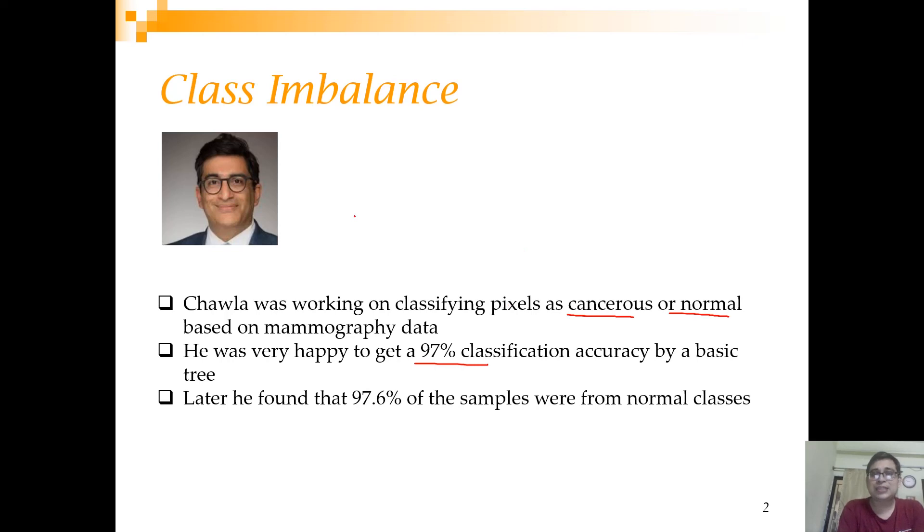Why? Let's understand this in more detail. Let's say you have 100 pixels in your sample and out of them 98 are normal and 2 are cancerous. If you build a simple program which takes a pixel as an input and tells it is a normal pixel, what will be the classification accuracy? It will be 98%. Why is this problem happening when the program has not learned anything? Because there is a big disparity, or imbalance, between the frequency of the classes. Such a problem is called the class imbalance problem.